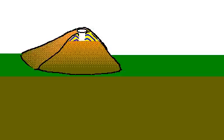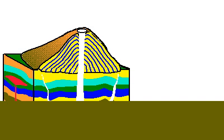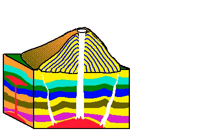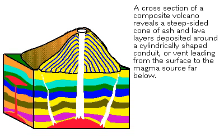A cross-section of a composite volcano reveals a cone of ash and layers of lava deposited around the vent that leads to the source of molten rock, or earth magma, far below.